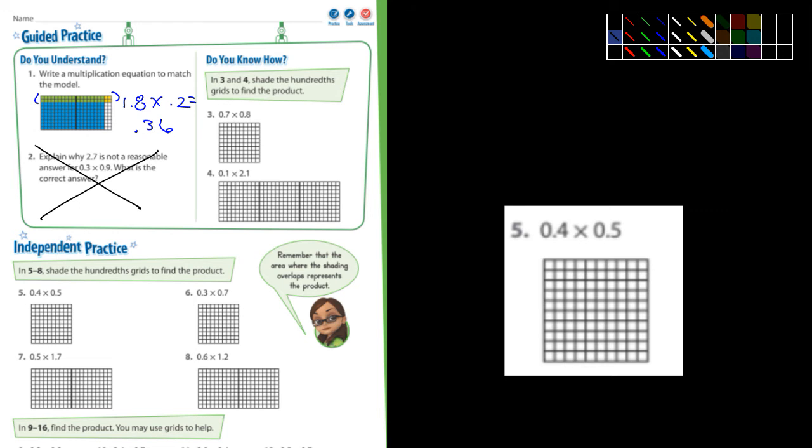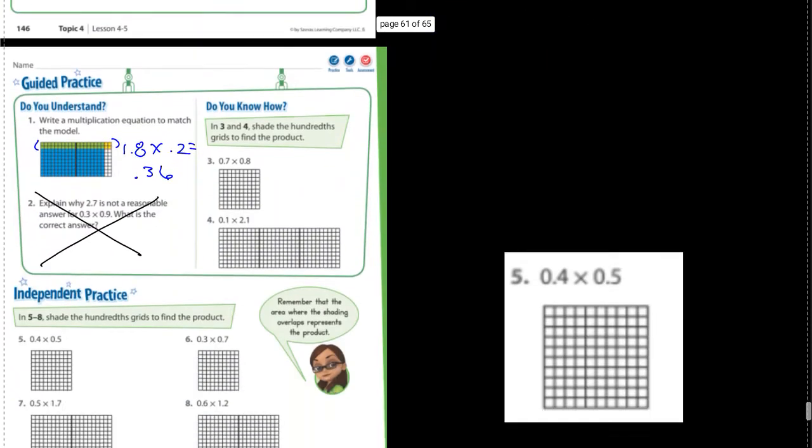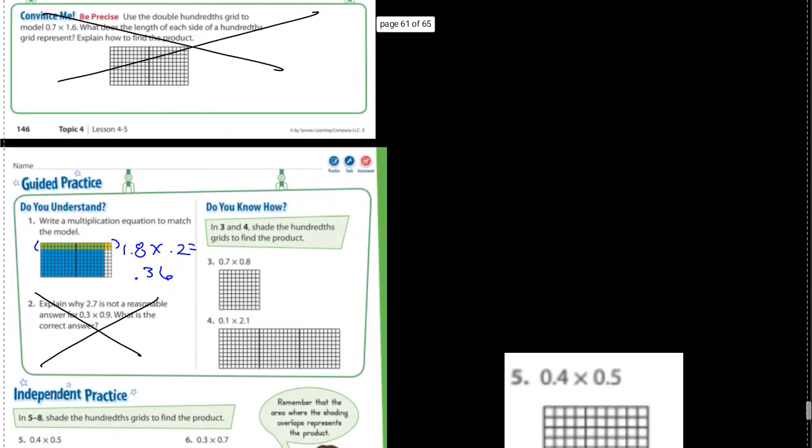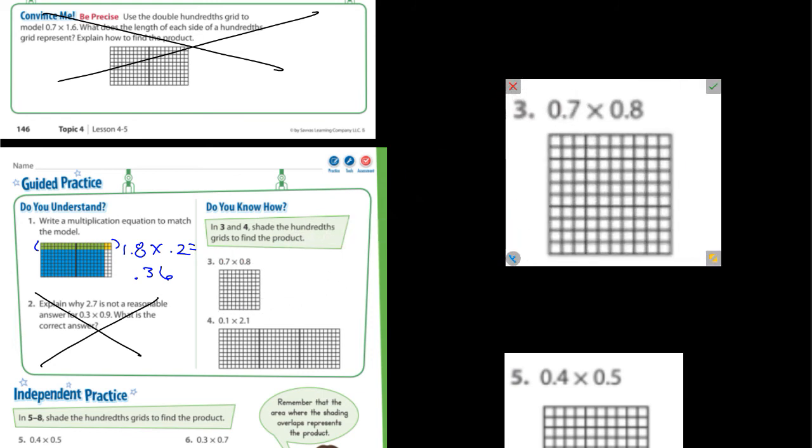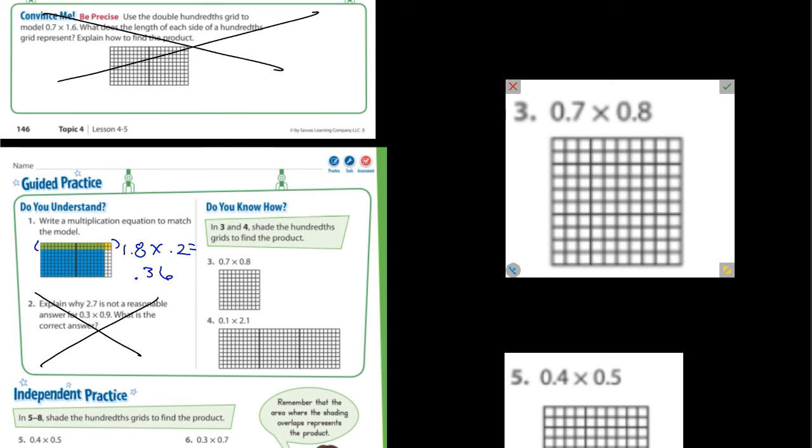In three and four, it says shade the hundredths grids to find the product. So let's look at number three. I'm going to make that a little bit larger and put it up here. And then I'm going to do the one just below that also, number five. This is what they want you to do. You'll probably need maybe some colored pencils to do it.